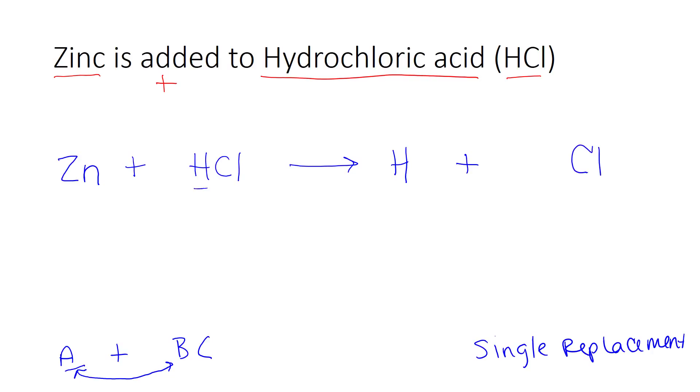I'm going to write the charges so I can figure out what the subscript needs to be. Zinc is one of the few transition metals that always has the same charge, a +2 charge. Chlorine has a -1 charge. This tells me when I drop and swap that I need two chlorines for every one zinc molecule. Going back to hydrogen, hydrogen is not a metal. It's acting like a metal right now, but it's not a metal. It's a diatomic element, which means any time it's by itself, like it is right here, I need to put a 2 in the subscript.